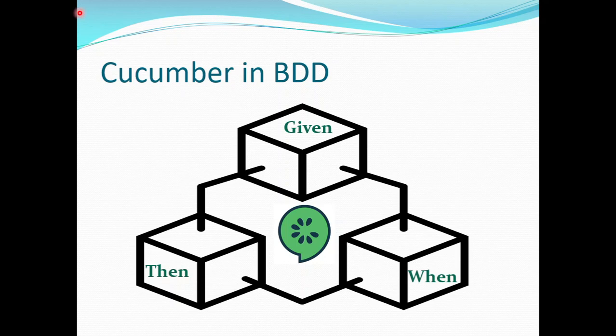To start off, as you know, Cucumber is the tool we use to design scenarios in the BDD framework, and the scenarios will be written in the file with the extension dot feature. So these are called the feature files. Now let's see how to design scenarios in this feature file.